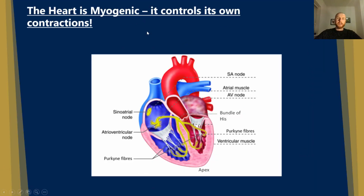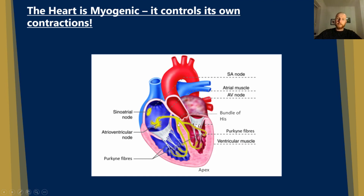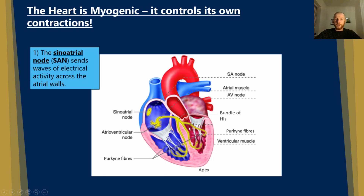The heart is myogenic, which means that it controls its own contractions. We've got the sinoatrial node located in the top right of the right atrium — remember, left is right with the heart. We've also got the atrioventricular node below it, and we can see the bundle of His coming off it and branching into the Purkinje fibers, which go deep within the ventricular tissue.